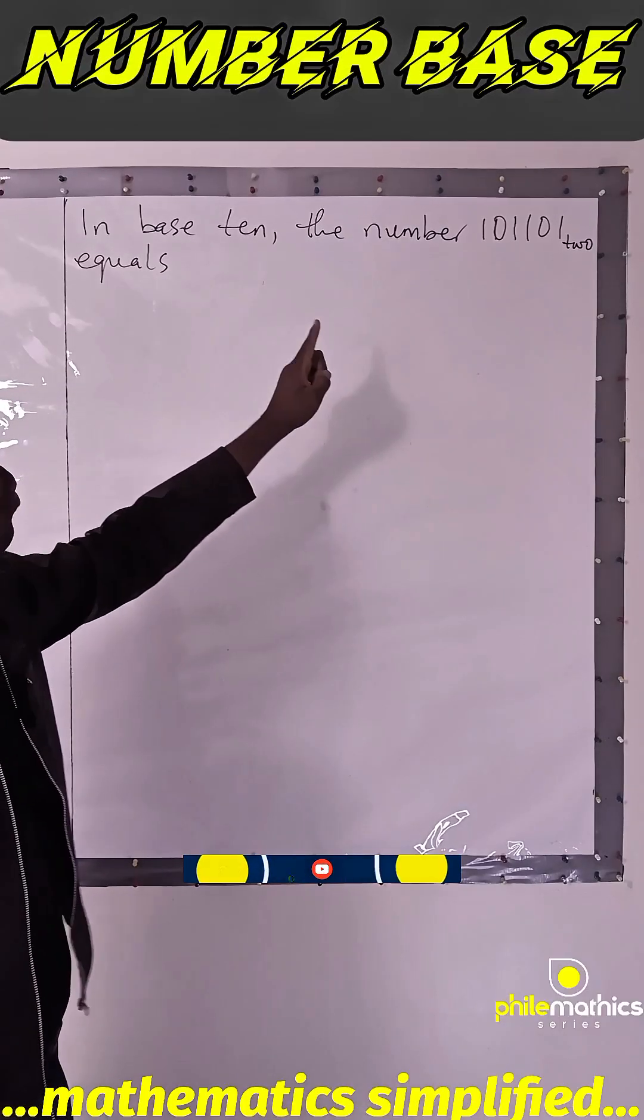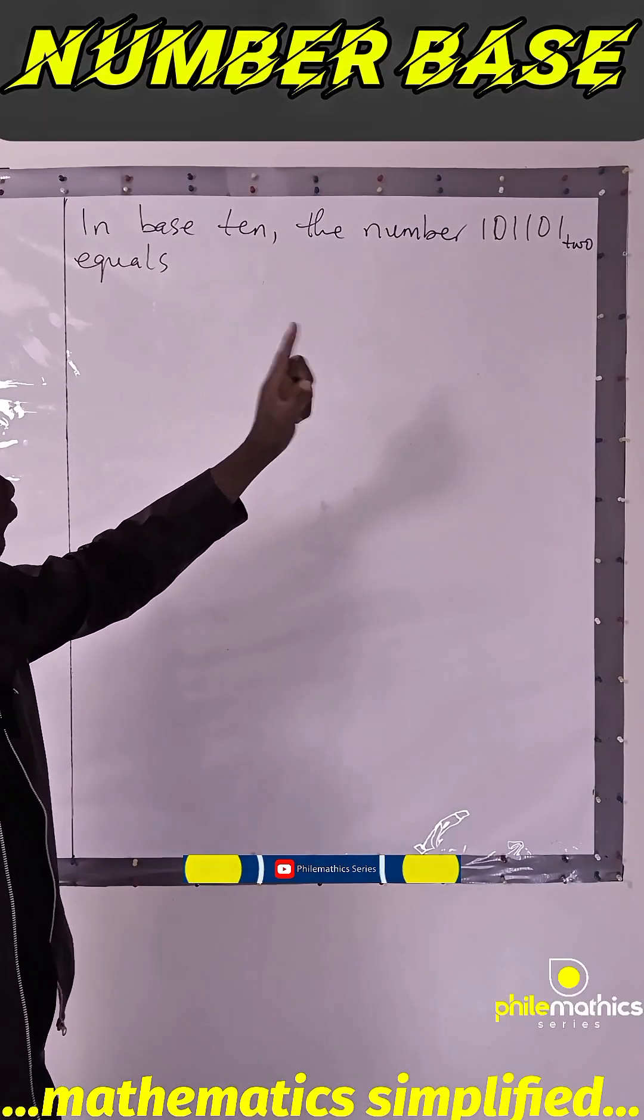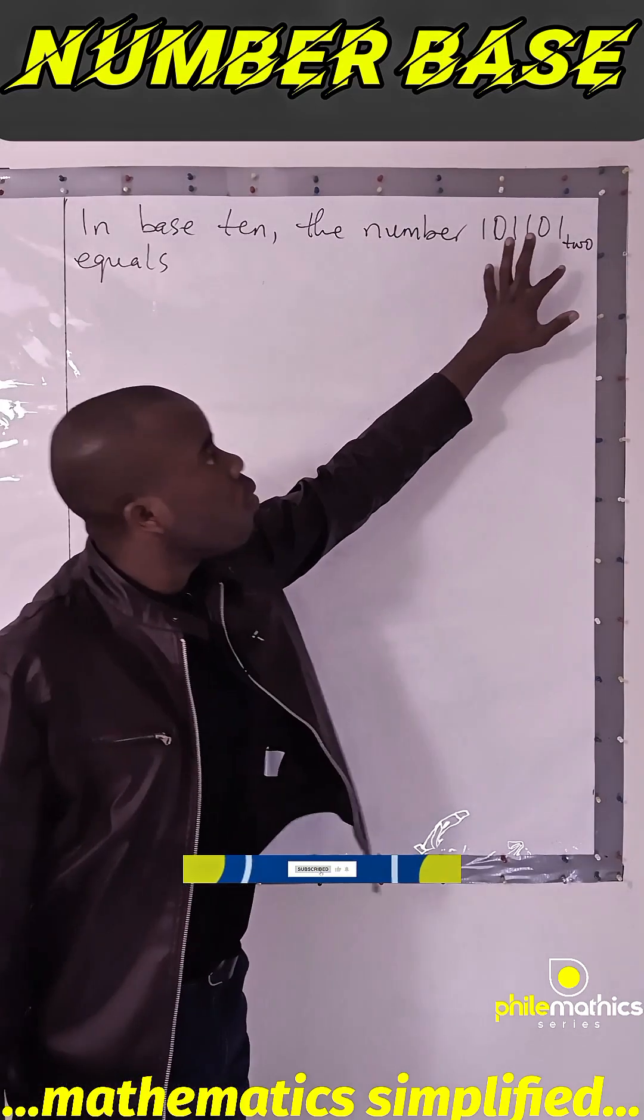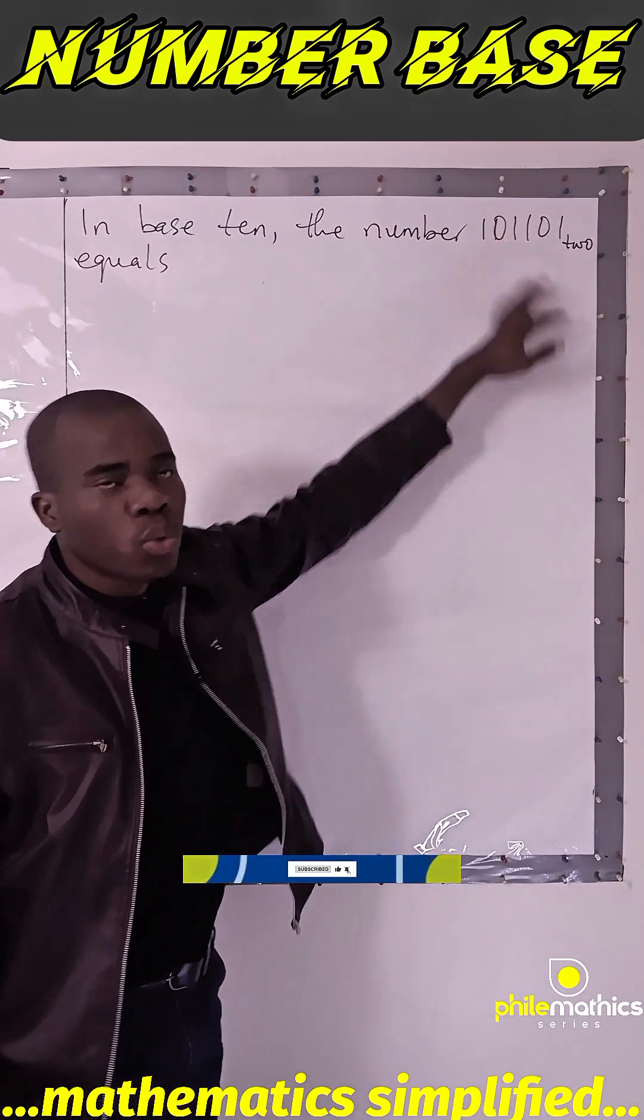In base 10, the number 101101 base 2 equals what? That is, what is the equivalent of this number in base 2 in base 10?